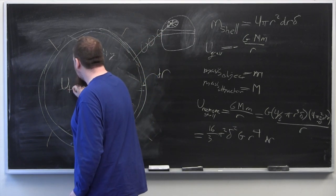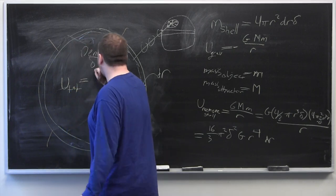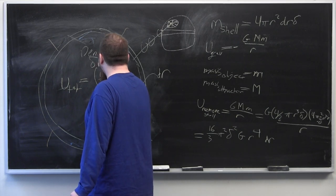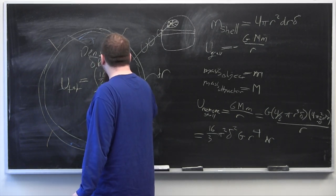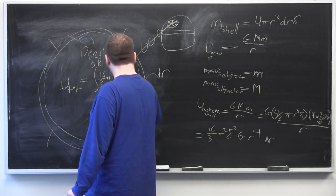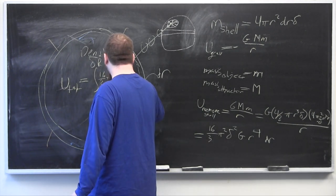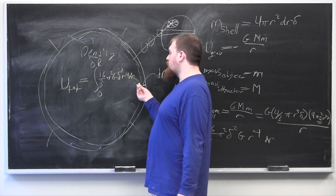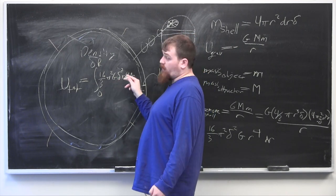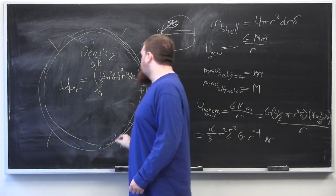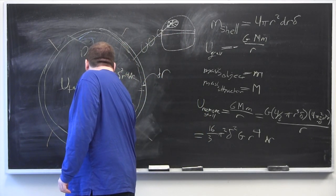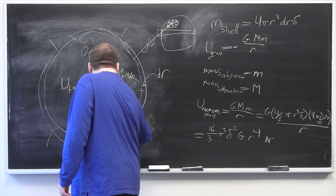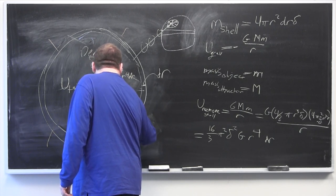So the total energy is going to be equal to the integral from 0 to R of 16 thirds pi squared g delta squared r to the fourth dr. And so this integral is going to only affect the r to the 4 dr, which turns into r to the fifth over 5. So this is going to be equal to 16 fifteenths pi squared g delta squared R to the fifth.